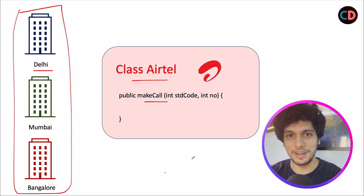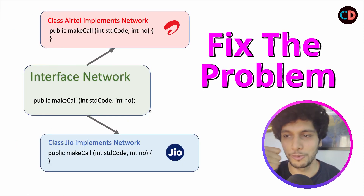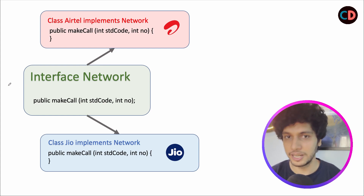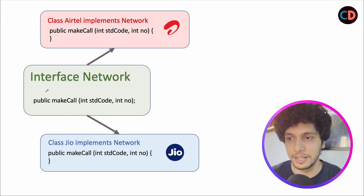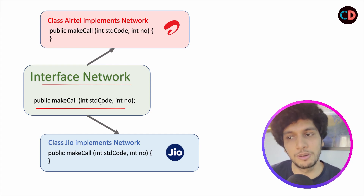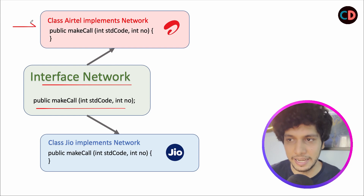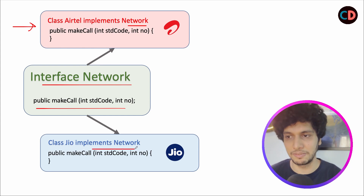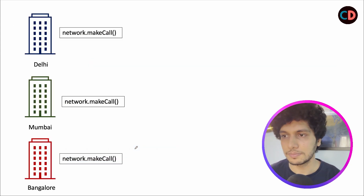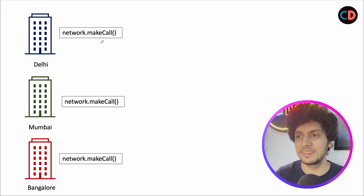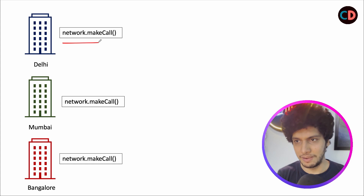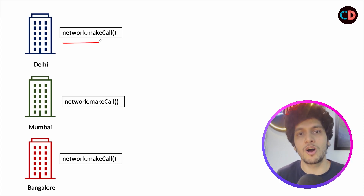Let's take the same example and understand how to go about the fix. The first thing we're going to do is build interfaces instead of concrete classes. We will create an interface named Network with a make call method. The parameters would be the same: STD code and number. We'll have two implementations: the Airtel class implementing the Network interface, and the Jio class also implementing the Network interface. Wherever we were using Jio objects in code, we replace them with network.makeCall(). Now we have a defined contract between our high-level classes and the interface.